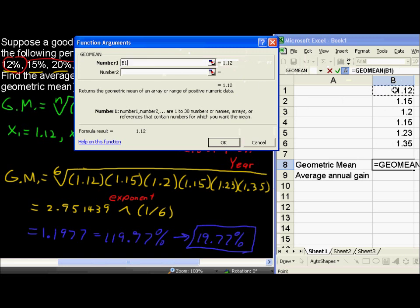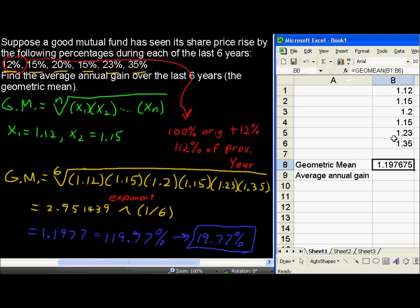So while this is highlighted, I'm going to choose B1 through B6. And then say OK, and I get that number that we had over here, that 1.1977.